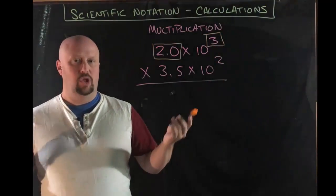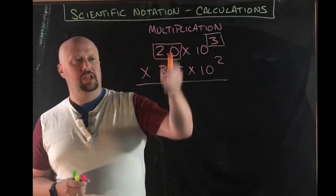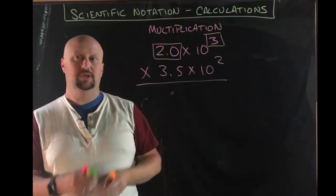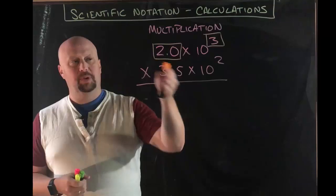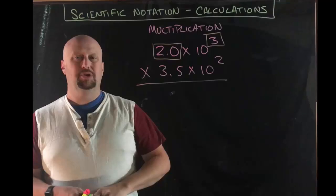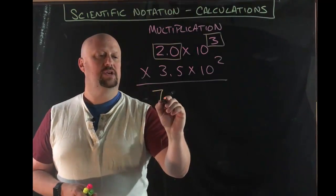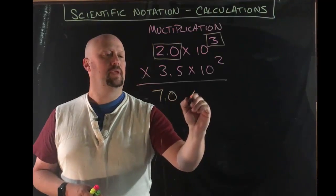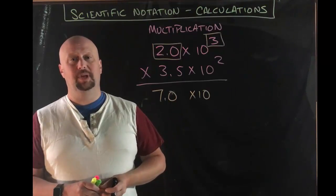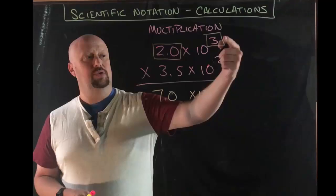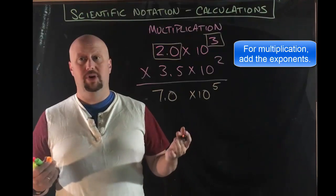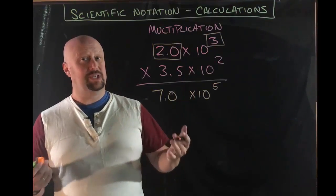Here's the way it works, and this is largely true for all of the problems: you're going to do the math on the coefficient part, and then there's something else you're going to do to the exponents. For multiplication, you do the math. In other words, multiply the two things that are the coefficients. So 2.0 multiplied by 3.5 is going to give me an answer of 7.0 for the coefficient part. Now I have to figure out what to do for the exponents. For multiplication, couldn't be easier. You're going to add the exponents. So 3 plus 2 gives me 5, and we're done. It's really as straightforward as that.